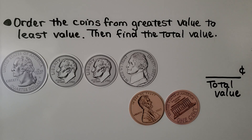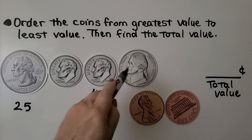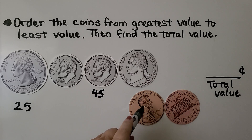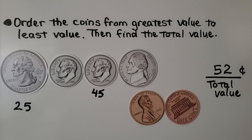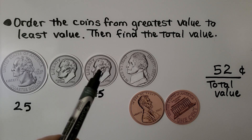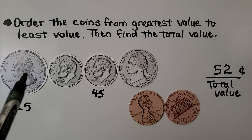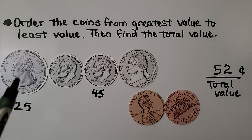Now we can count their value: 25, 35, 45. Now we're at 45. If we add 5 more, we're at 50, 51, 52 cents. It helped us to put them from greatest value to least value. If we had started with the pennies, we would have had 2 cents, plus 5 is 7, plus 10 is 17, plus 10 is 27, and then we'd have to add 25. So it's easier to start with the greater value: add a 10, add a 10, add a 5, add 1s.